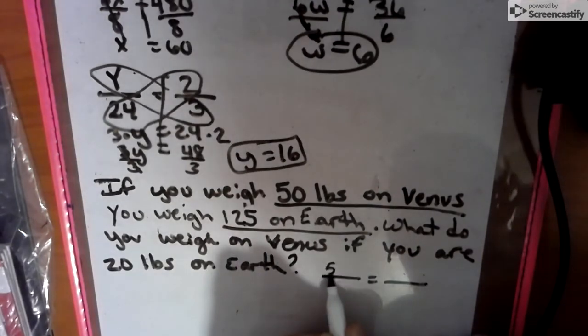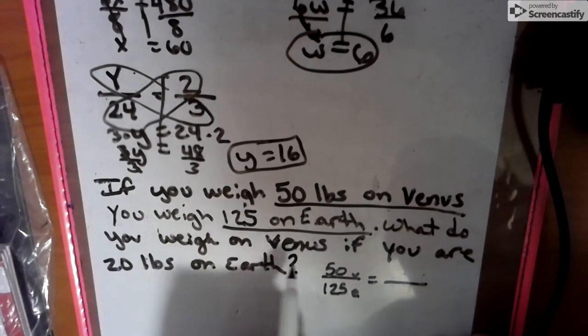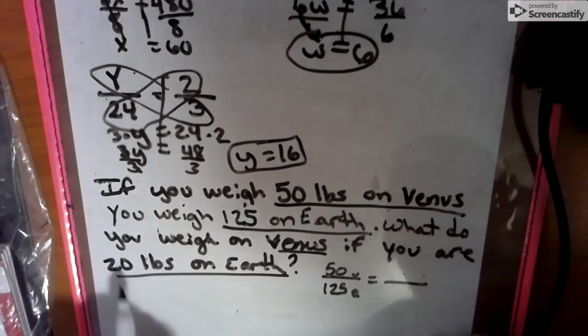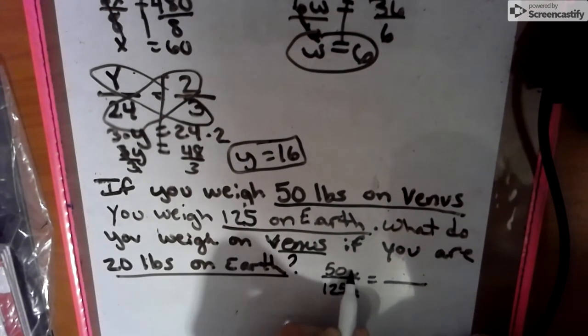So we have 50. And I'm just going to put a little V here so we know that's Venus. And I'm going to put 125 because that's Earth. And then what do you weigh on Venus if you weigh 20 pounds on Earth? What other piece of information were we given? We were given 20 pounds on Earth.